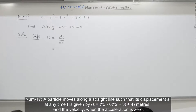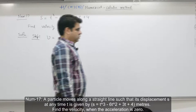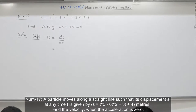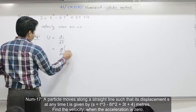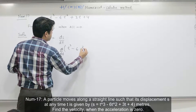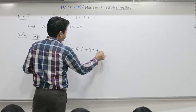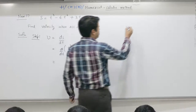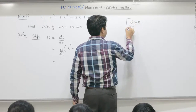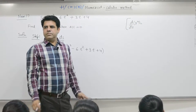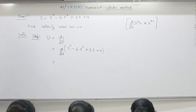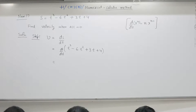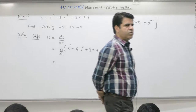Solve it. Differentiating s = t³ - 6t² + 3t + 4. The formula is d/dx of xⁿ = n·xⁿ⁻¹. One formula for differentiation and one for integration — that is what you apply 80 percent of the time.